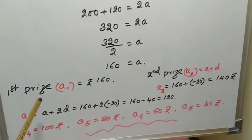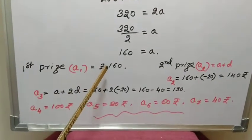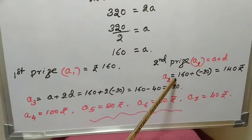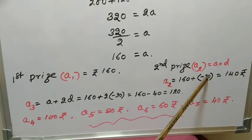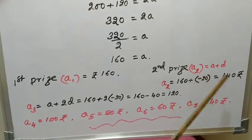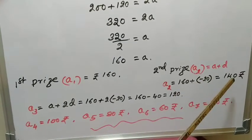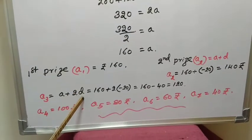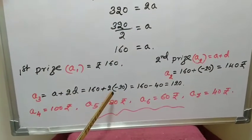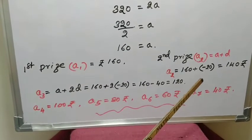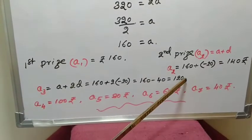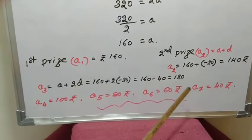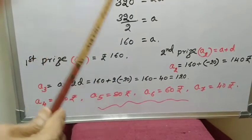That is the first prize. Therefore, first prize A1 equal to 160. Second prize A2 equal to A plus d, that means A2 equal to 160 plus d equal to minus 20. Therefore, 160 minus 20, that is 140. Third prize, subtract 20 rupees from this, fourth prize equal to 100, fifth prize equal to 80, sixth prize equal to 60, seventh prize equal to 40. In this way, we can calculate all the prizes.